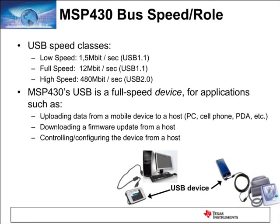Regarding the MSP430 bus speed, USB 1.1 supported two bus speeds: low speed and full speed. Low speed was popular for mice and similar devices but is not used as commonly anymore. Full speed is one of the most popular bus speeds in the USB spec. High-speed devices are less common because of their high bit rate at 480 Mbit/s. For the MSP430 with its 25 MHz processor, full speed is the perfect fit, supporting a 12 Mbit/s USB spec.